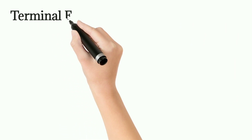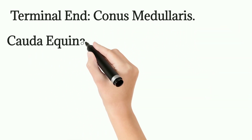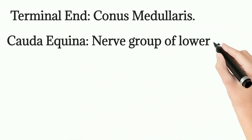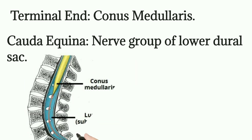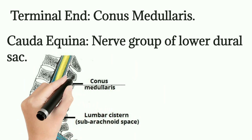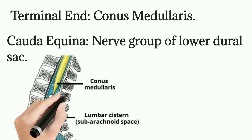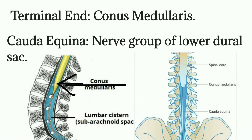The spinal cord ends at the level of L1 as the conus medullaris. Below L1, a group of nerves continues within the dural sac — this bundle of nerves is called the cauda equina.